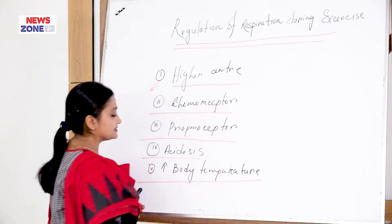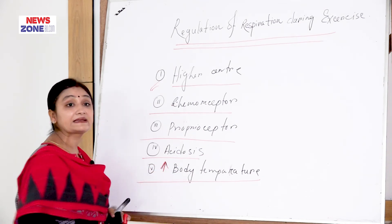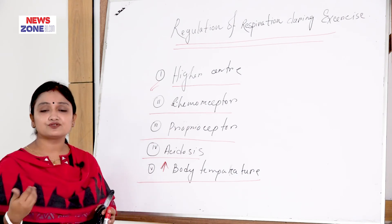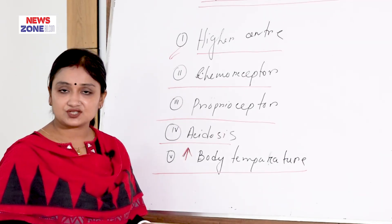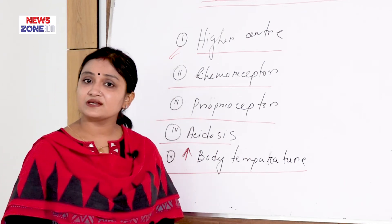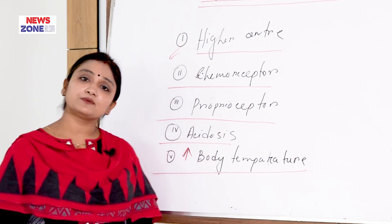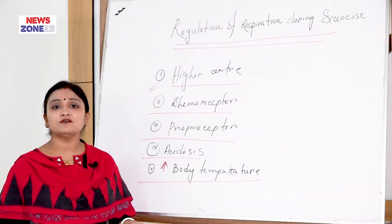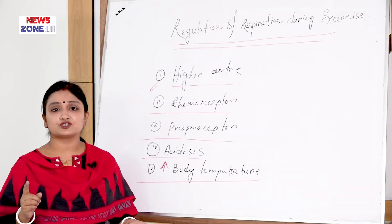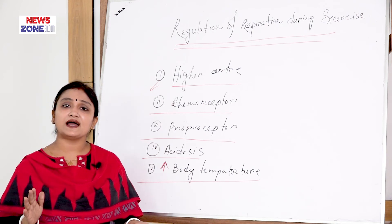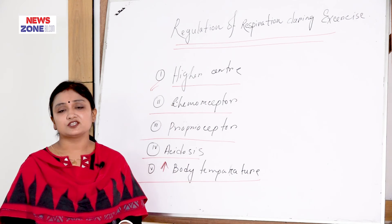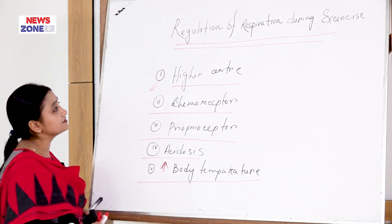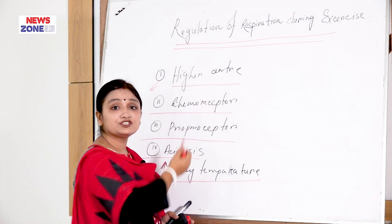The fifth point is increased temperature. During exercise, metabolism increases, which leads to more production of heat and an increase in body temperature. This increased body temperature stimulates the higher brain center and the respiratory center via afferent somatic signals, causing stimulation of the respiratory center and an increase in the rate and depth of respiration. These five factors ultimately regulate respiration during exercise.